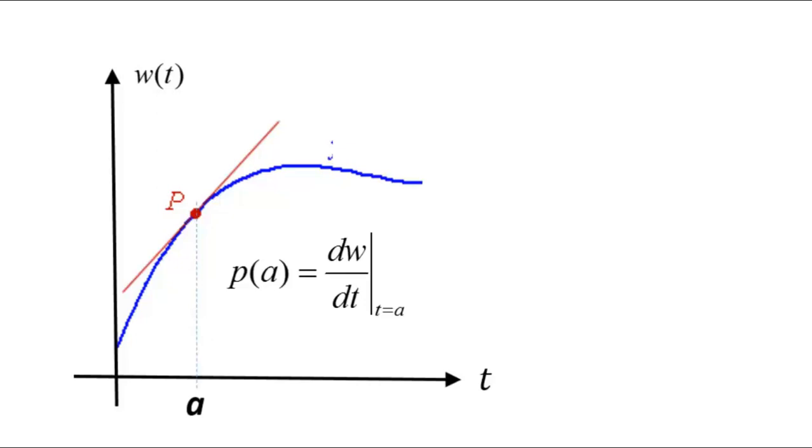that slope is dW/dt evaluated at t equals a. And that is the power absorbed by the customer at t equals a. Or if it is a generator, the power delivered by the generator at t equals a, so many watts. Slope is power.